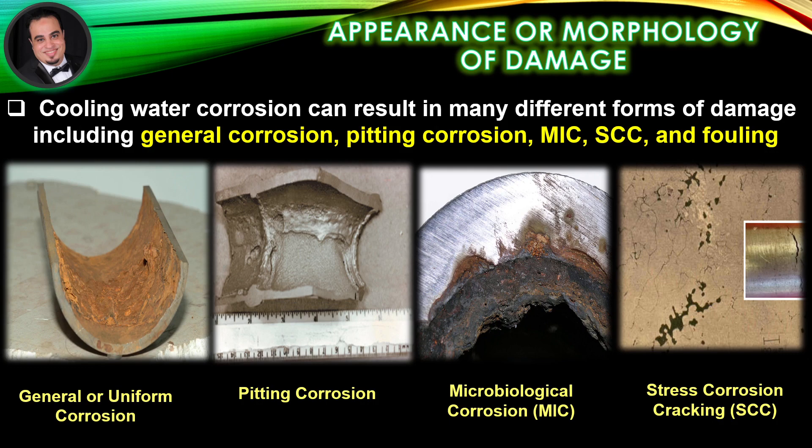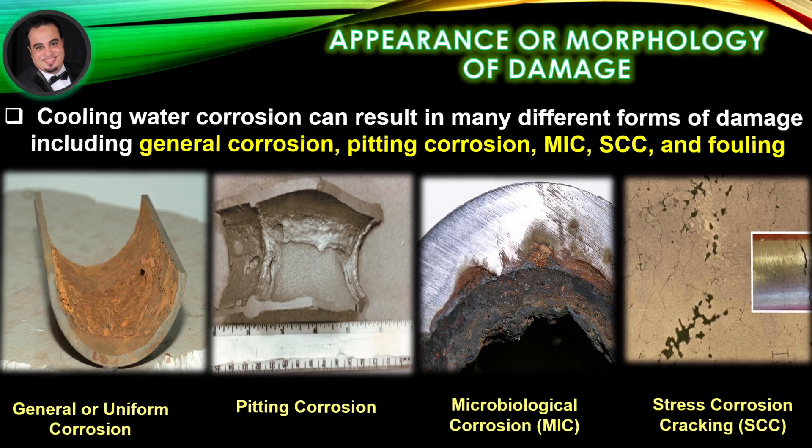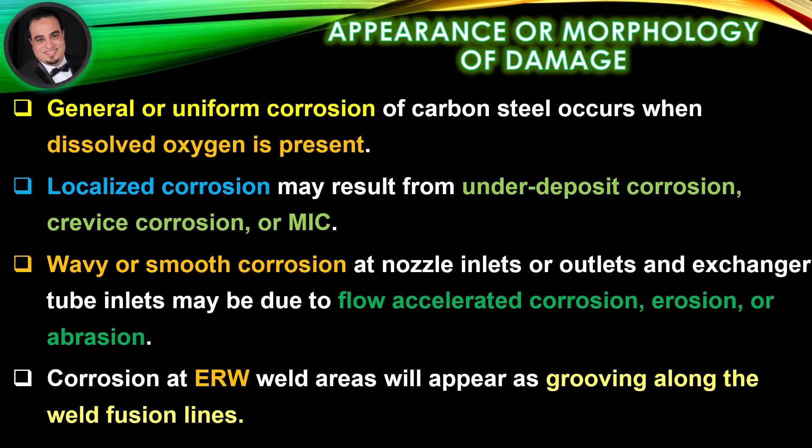Forms of damage also include microbiological corrosion, stress corrosion cracking, and fouling. General or uniform corrosion of carbon steel occurs when dissolved oxygen is present. Localized corrosion may result from under-deposit corrosion, crevice corrosion, or microbiological corrosion. Wavy or smooth corrosion at nozzle inlets or outlets and exchanger tube inlets may be due to flow-accelerated corrosion, erosion, or abrasion. Corrosion at electric resistance welding weld areas will appear as grooving along the weld fusion lines.